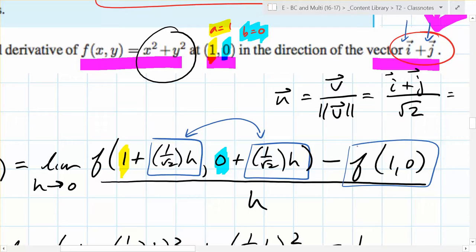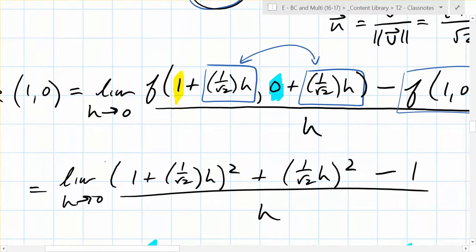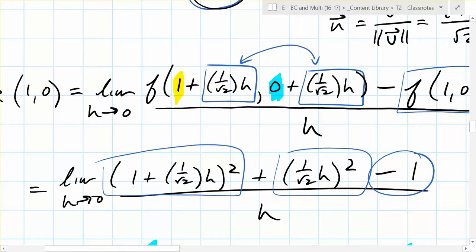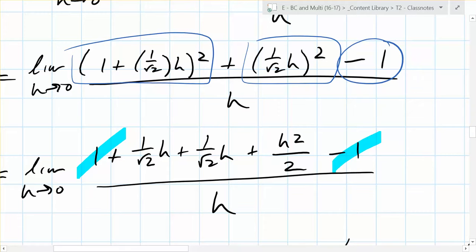And then you're subtracting f of 1, 0. And now it's just algebra, everybody. Now it's just algebra. The function is x squared plus y squared. You plug things in. You have to square this and you have to square this. And then you have 1. And look, I'm even doing the algebra for you on this one just so that you don't have to relive all of the challenge of doing this algebra. Do you see the blue cancellation right there? Why is that blue cancellation so helpful?